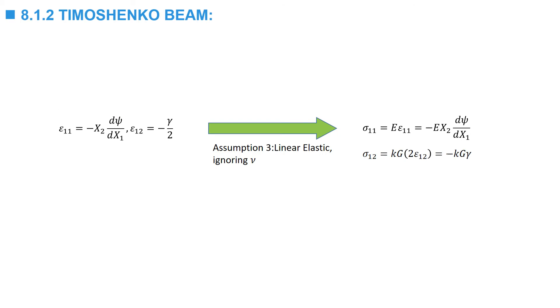The constitutive law can now be used to replace the strains with the stresses. Assuming linear elastic, this is epsilon-1-1 as shown in the previous slide from the strain matrix. Sigma-1-1 is equal to Young's modulus multiplied by epsilon-1-1, and epsilon-1-2 is equal to negative gamma over 2. Sigma-1-2 is equal to Kg multiplied by twice epsilon-1-2, so negative Kg multiplied by gamma.